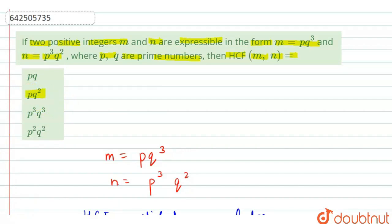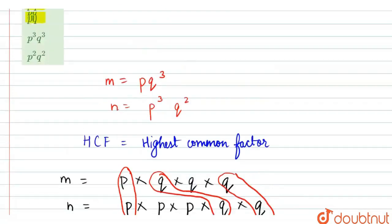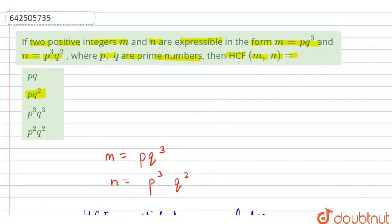So we will write the conclusion. Therefore, HCF of M and N is PQ square. I hope you understood this explanation. Thank you.